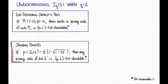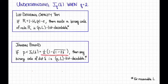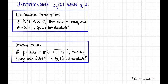The Johnson bound, instantiated for binary codes, says that if p is less than the Johnson radius — which happens to be one half times one minus the square root of one minus two delta when q equals two — then any binary code of distance delta is p-l list decodable for some reasonable list size l.